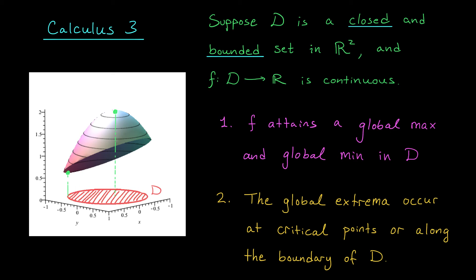Wherever we find the biggest value, that's going to be our global max. Wherever we find the smallest value, that's going to be our global min. Ah, but hold on a second. Do you notice something a little fishy about what I just said?